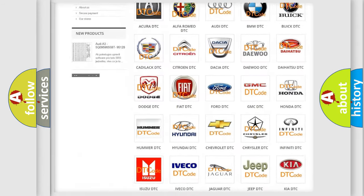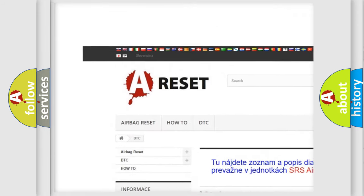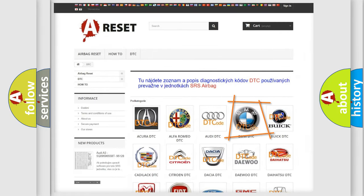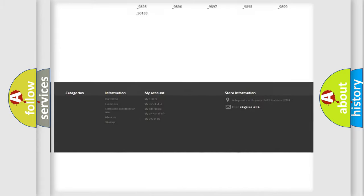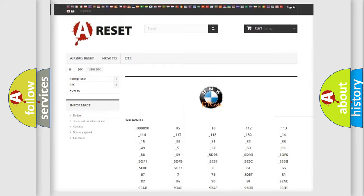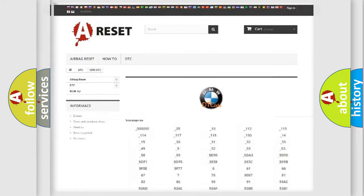Our website airbagreset.sk produces useful videos for you. You do not have to go through the OBD2 protocol anymore to know how to troubleshoot any car breakdown. You will find all the diagnostic codes that can be diagnosed in BMW vehicles, also many other useful things.